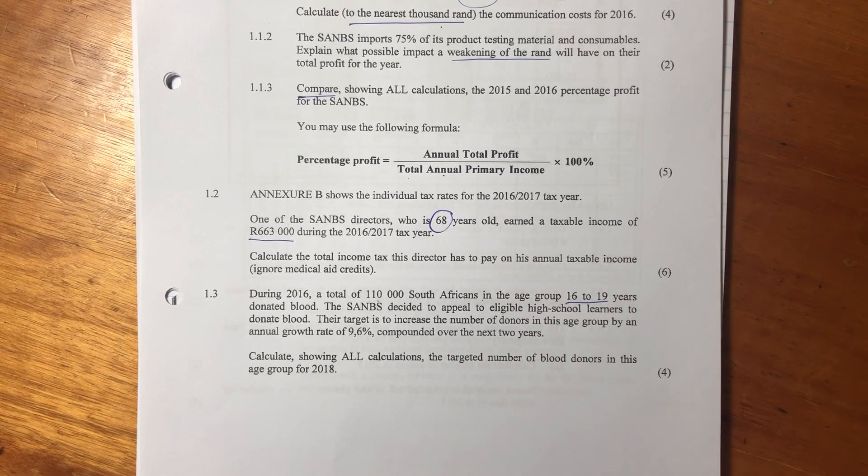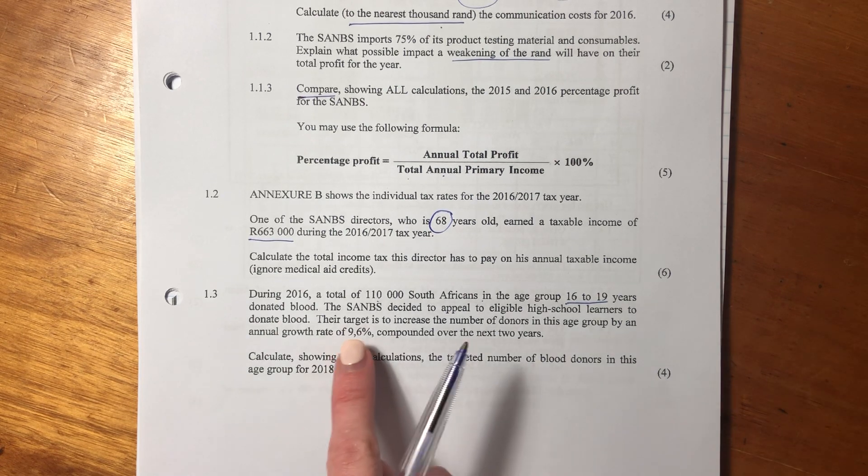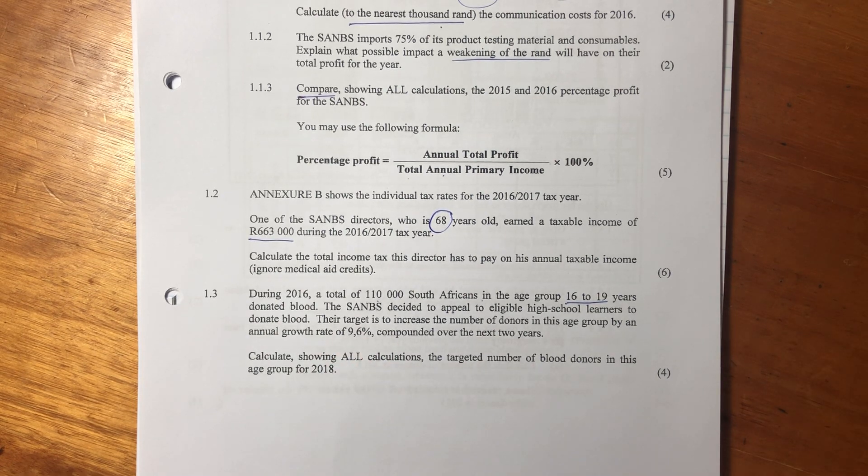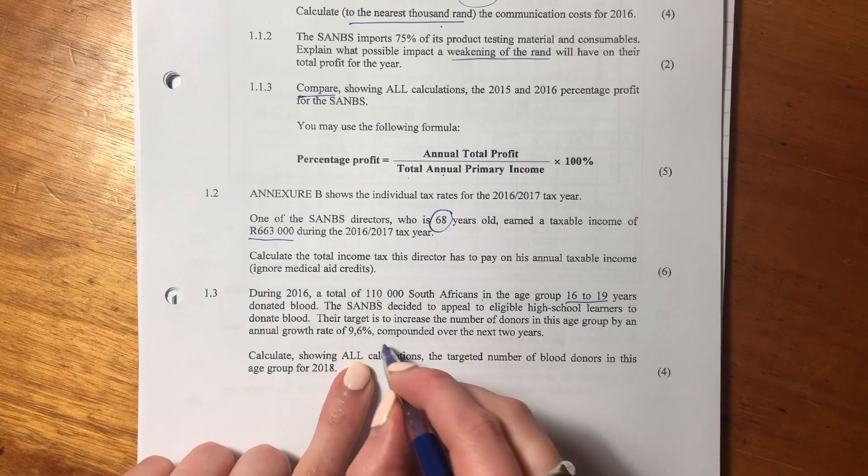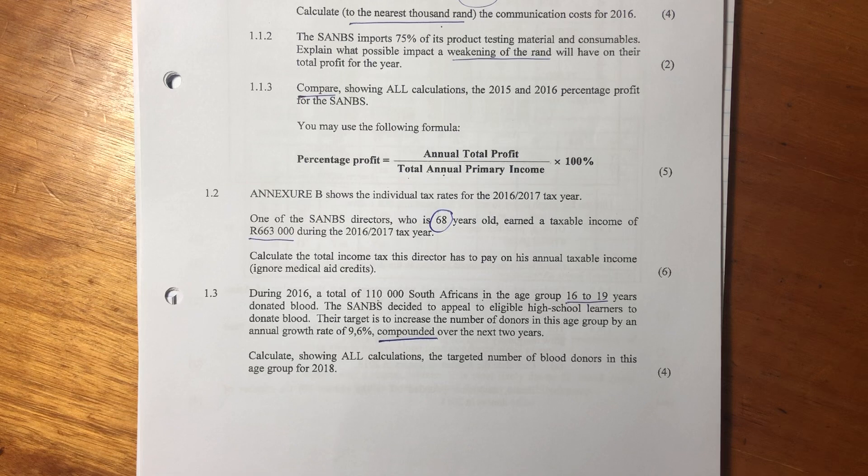The SANBS decided to appeal to eligible high school learners to donate blood. I'm sure some of you at your school, they actually come to your school and ask you to donate blood. Their target is to increase the number of donors in this age group by an annual growth rate of 9.6% compounded over the next two years.